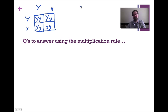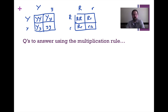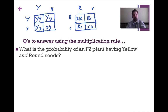For the round seeds cross, we do the same type of monohybrid cross with big R and little r. The Punnett square gives us: RR, Rr, Rr, and rr. Now that we've done these two monohybrid crosses, we can answer probability questions.